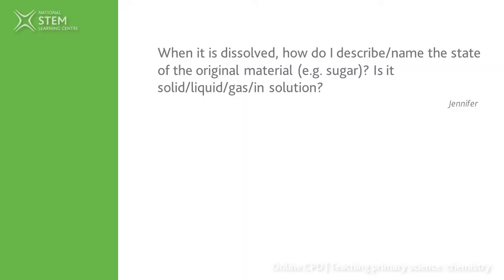Our second question came from Jennifer, who asked: when a substance is dissolved, how do I describe or name the state of the original material? For example, sugar dissolved into water — is it solid, liquid, or gas dissolved into a solution? Well, if we're talking scientifically, the correct terms are: it's a solute, and the solute is dissolved in the solvent.